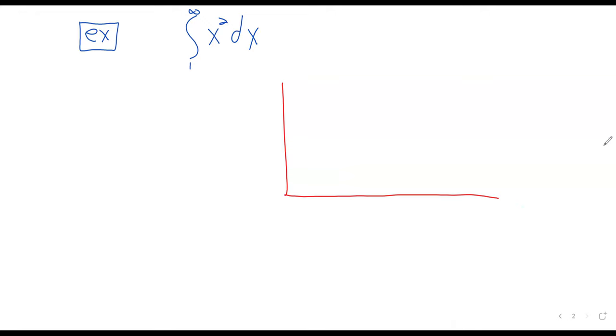The region never ends, but it has to get so thin that even though there's an infinite region, it has a finite area. So, we looked at e to the negative x, that's exactly what e to the negative x looks like. Instead of doing something like x squared, which is just kind of silly, let's look at 1 over x.